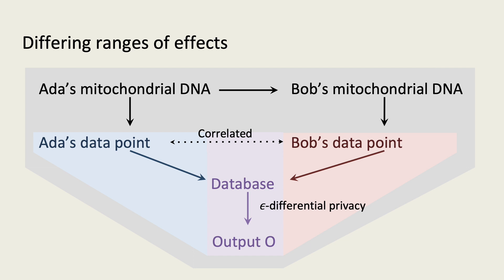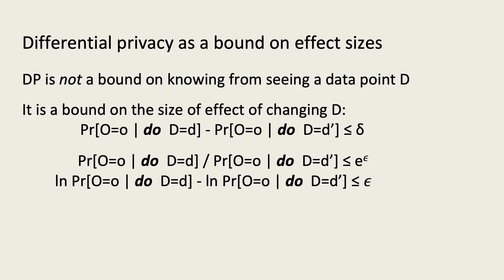So while a data point's correlation might be twice what you expect, its effects won't be. The consequence of this is that while differential privacy does not bound how much an adversary can learn about a data point from an output, it does bound the effect size of the data point on that output.